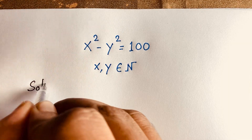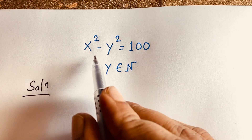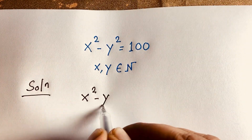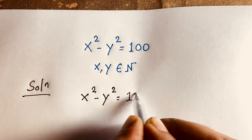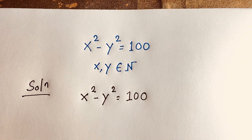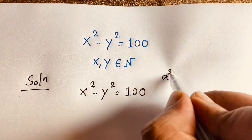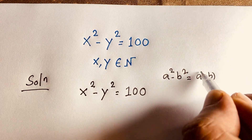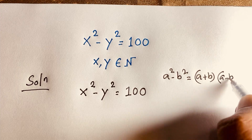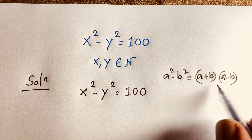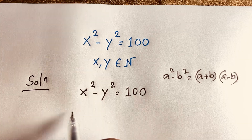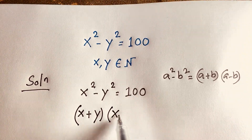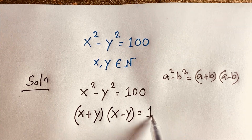Solution. Our question is x squared minus y squared is equal to 100. Now, using the identity a squared minus b squared equals a plus b times a minus b, I can rewrite this expression as x plus y times x minus y is equal to 100.